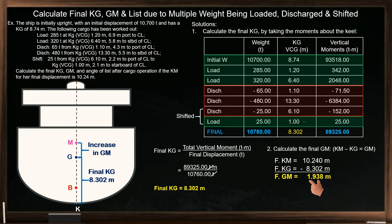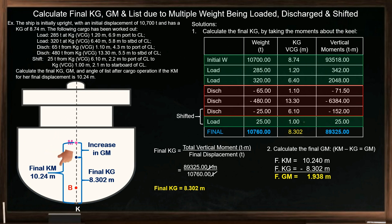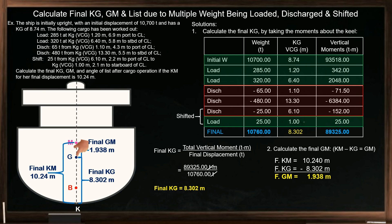Checking at the ship's transverse section, the final KM is 10.24 meters. By subtracting the final KG, the GM is positive 1.938 meters. The ship's condition is stable because the center of gravity is below the metacenter.